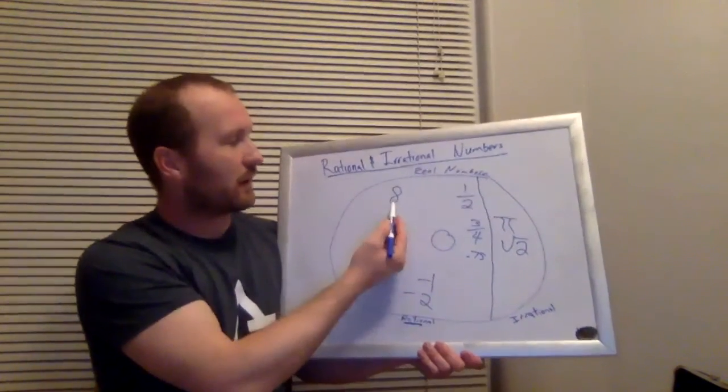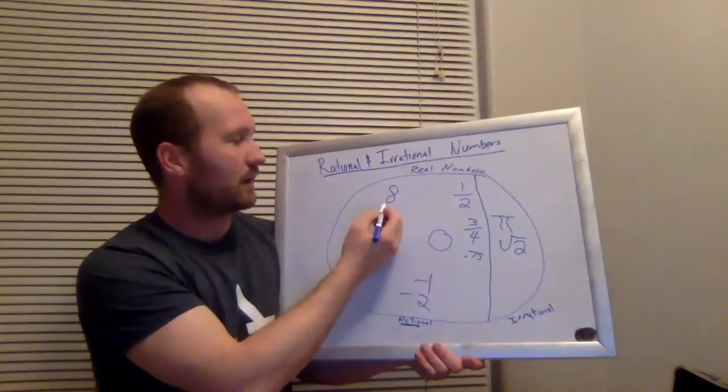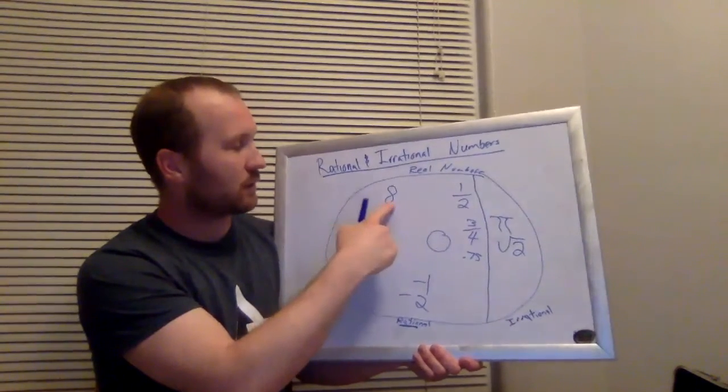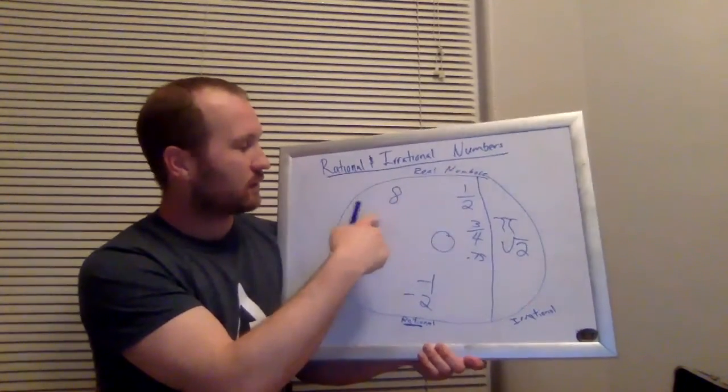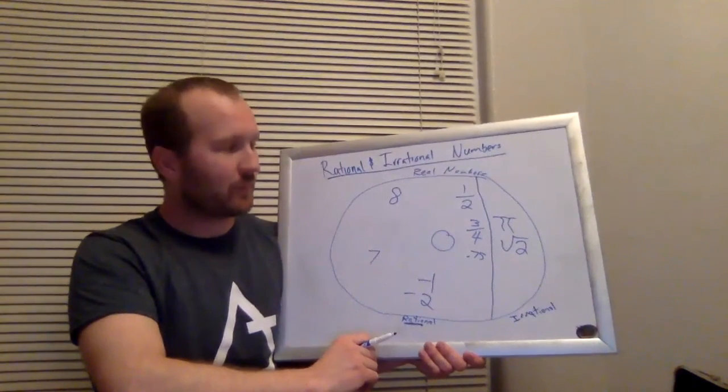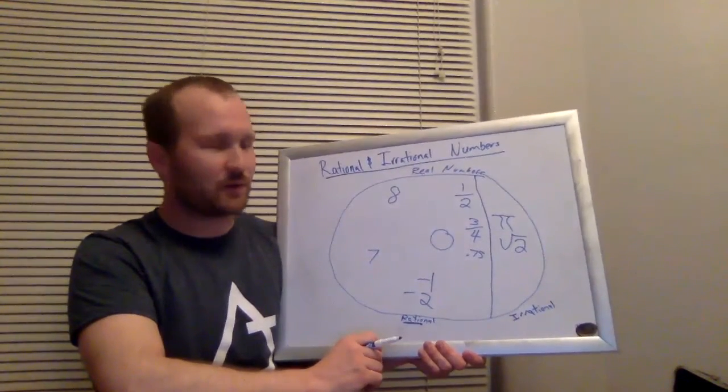So you have to remember that eight, for example, can be written as eight over one, and so that's what makes that a rational number, the ratio of two integers, which we'll get into in a second.